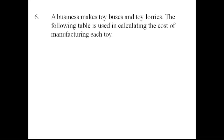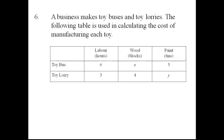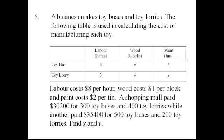Question 6. A business makes toy buses and toy lorries. The following table is used in calculating the cost of manufacturing each toy. Labor costs $8 per hour, wood costs $1 per block, and paint costs $2 per tin. A shopping mall paid $30,200 for 300 toy buses and 400 toy lorries, while another paid $35,400 for 500 toy buses and 200 toy lorries. Find X and Y.